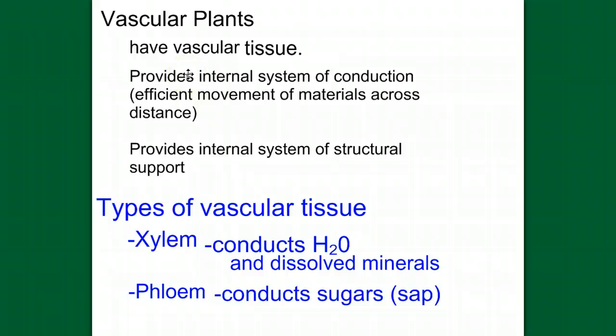So these ferns, these vascular plants, have vascular tissue, providing this internal system of conduction, which allows for efficient movement of materials across distance, also provides an internal structural support. The two types of vascular tissue are xylem and phloem, xylem for the conduction of water and dissolved minerals, and phloem for the conduction of sugars.